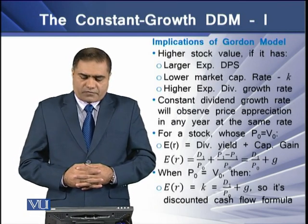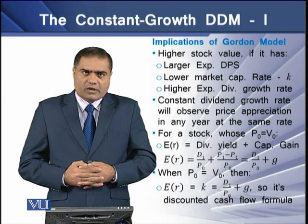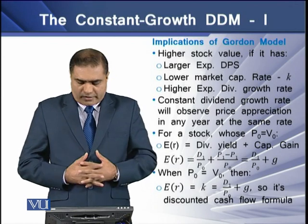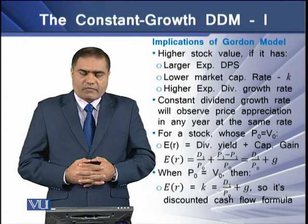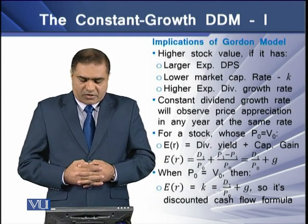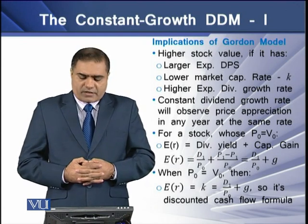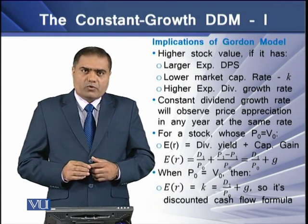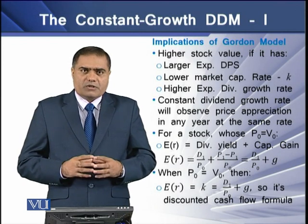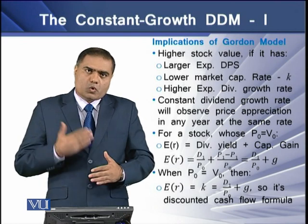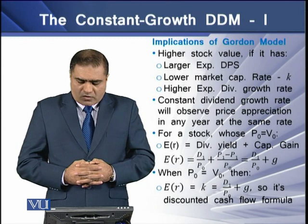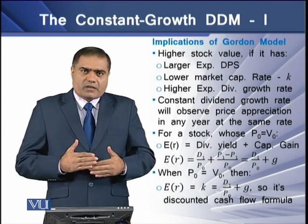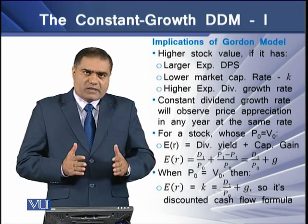The constant growth dividend discount model is also known as the Gordon model, as it was developed by Gordon. The first implication is that the stock value is higher if there is a larger expected dividend per share D1, a lower market capitalization rate K, or a higher expected dividend growth rate G. This means higher D1, lower K, and higher G all lead to a higher V0 or intrinsic value. The model also observes price appreciation in any year at the same rate as the growth rate.